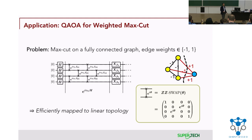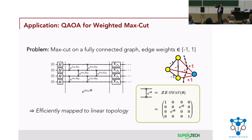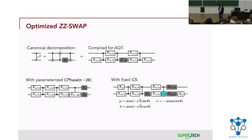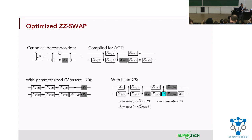We look at a simple QAOA optimization application for max-cut on a graph, mapped onto a linear topology. The key operation we want is a ZZ-SWAP. We look at decomposing this ZZ-SWAP in multiple ways: a typical decomposition on one hand, then using the specific low-level gates AQT provides, and then further variations using the CS gate or varying the angle of a C-phase gate. The interesting thing is we end up with many different decompositions.